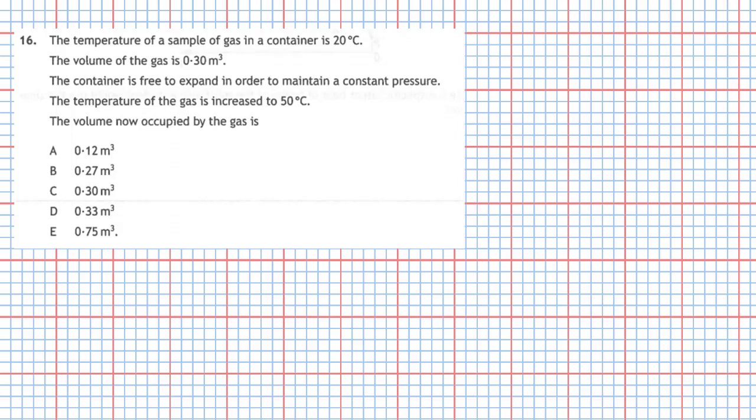Question 16 from section 1 of the 2019 National 5 Physics Examination. The temperature of a sample of gas in a container is 20 degrees Celsius. The volume of the gas is 0.30 meters cubed.